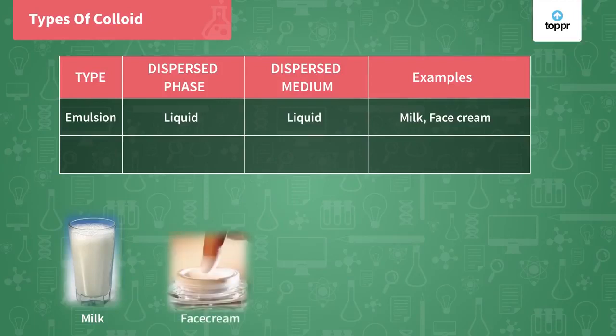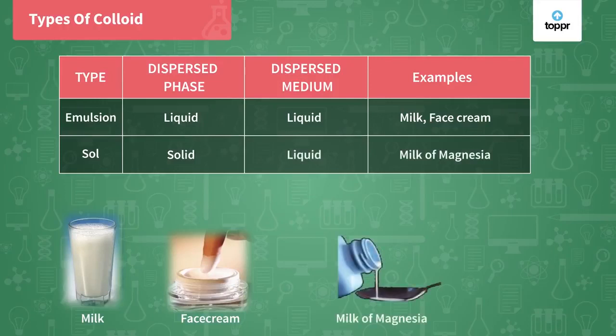Then we have sol. Sol is a type of colloid in which the dispersed phase is a solid and the dispersion medium is a liquid. The example is milk of magnesia, where magnesium oxide which is a solid is mixed in water that is a liquid, and it forms a colloid. Such a type of colloid is called sol.